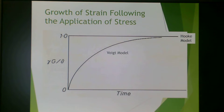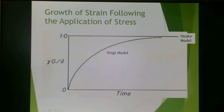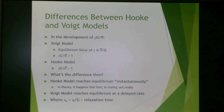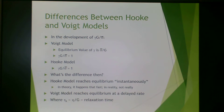Comparing the Hooke model and the Voigt model: when you apply a stress in the Hooke model, you get instantaneous strain. With the Voigt model, you get strain growth over a period of time, which is more appropriate for a viscoelastic response. In both models, the equilibrium value of strain grows to 1, but in the Hooke model you reach equilibrium instantaneously, whereas in the Voigt model it reaches that same equilibrium at a delayed rate — delayed by tau sub K, or viscosity divided by rigidity modulus.